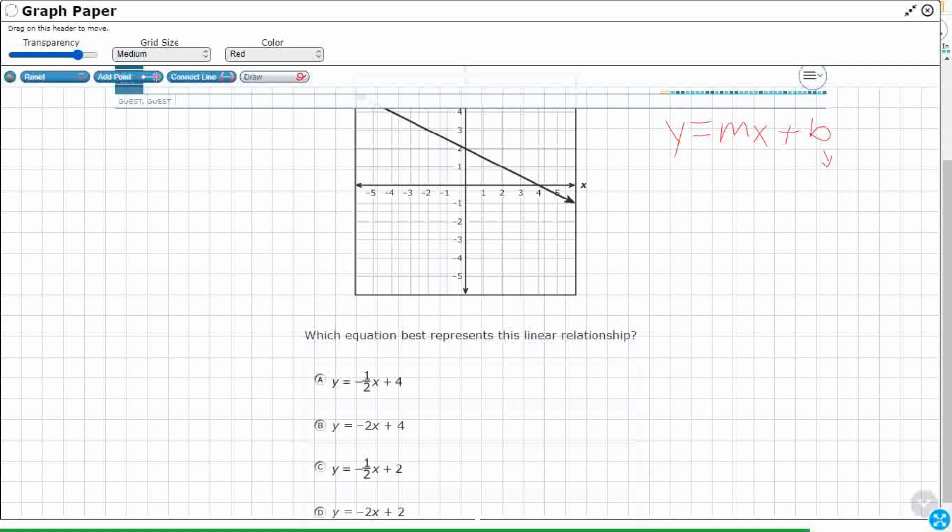This b right here is actually called our y-intercept. So it's where the line crosses the y-axis, right, the vertical axis. So if x is zero, because if it's crossing the y-axis, that means x is zero. Well, if x is zero, look right here. Zero times m would be zero. That means y equals b. So that's how we can figure out what our y-intercept is.